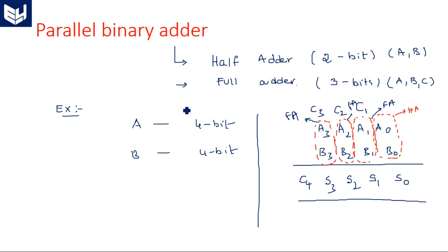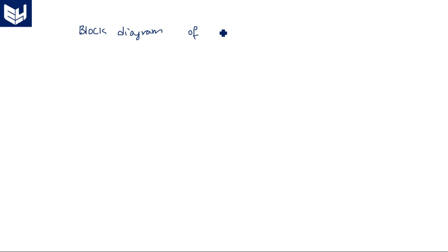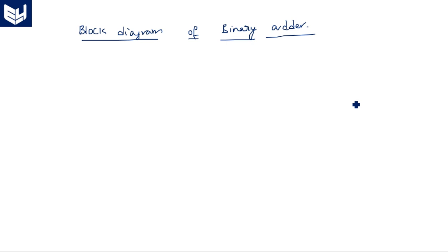Now we are creating a parallel binary adder. Whatever explanation we showed in the calculation part, the same has to be drawn as a block diagram. The number of bits is equal to the number of full adders needed.